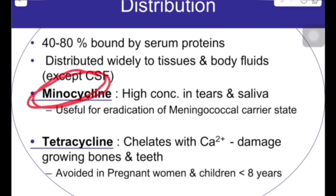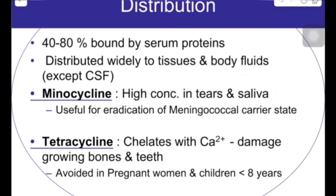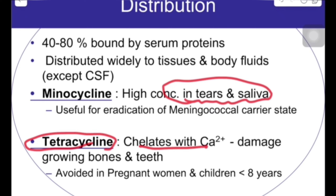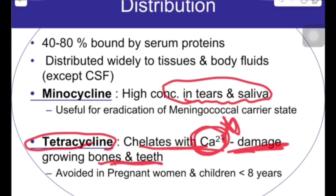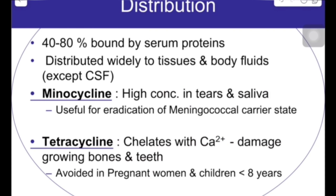An important point about minocycline is that it is highly concentrated in tears and saliva. Regarding tetracyclines generally, because they cause chelation with calcium, they also cause damage to growing bones and teeth, and cause discolouration of the teeth.